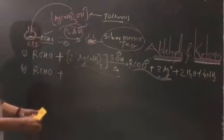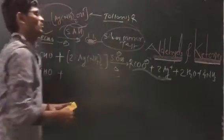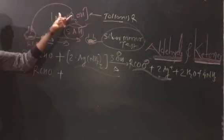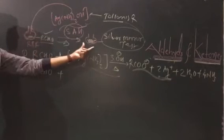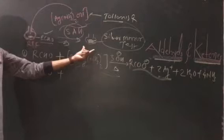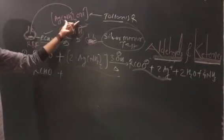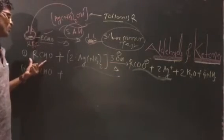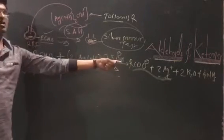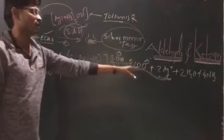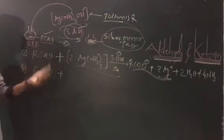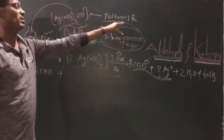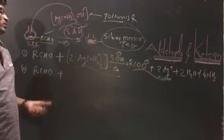Tollens' reagent is useful for distinguishing between aldehydes and ketones. A beaker containing aldehyde, upon addition of silver ammonium hydroxide, gives the silver mirror test. This is due to the oxidation of aldehyde to carboxylate ion. The silver mirror test is positive with aldehyde but not with ketone. Tollens' reagent is the particular test most useful to distinguish aldehydes and ketones.